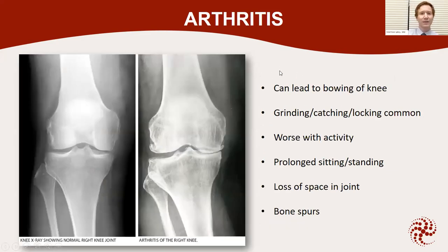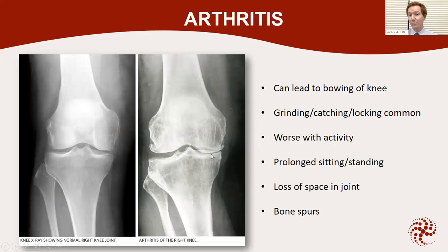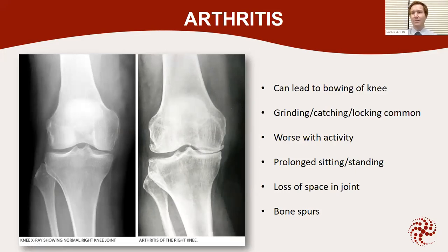Some folks ask why we need x-rays. X-rays do give a good indication of where arthritis is and how significant it is. On an arthritic knee x-ray, you can see a pretty significant loss of joint space between the femur and tibia — that's basically where the cartilage is, and it doesn't show up on x-rays. When the cartilage is gone, that space is gone, and those bones get closer together. You can see bone spurs forming. Some folks ask if you can take the bone spur out and make it better — bone spurs are just a reaction, your body trying to heal the arthritis by laying down bone and stiffening the joints. Taking out the bone spur doesn't really help very long; it can just come right back.